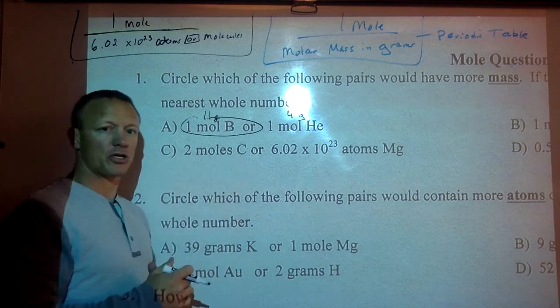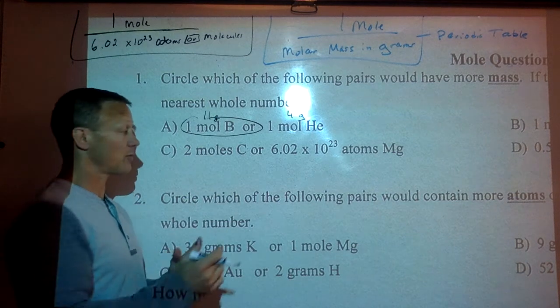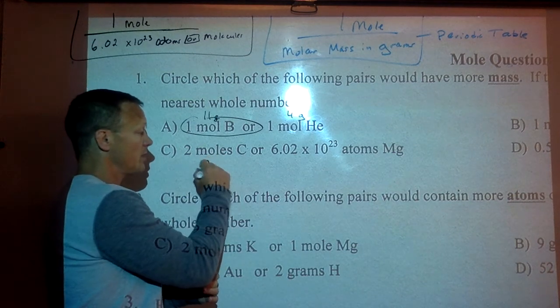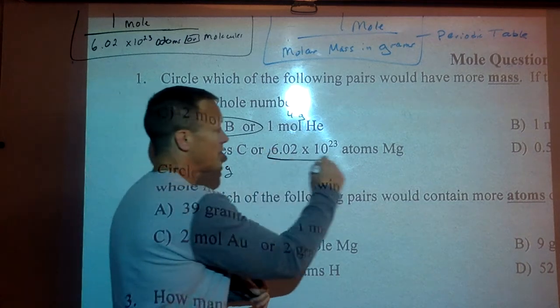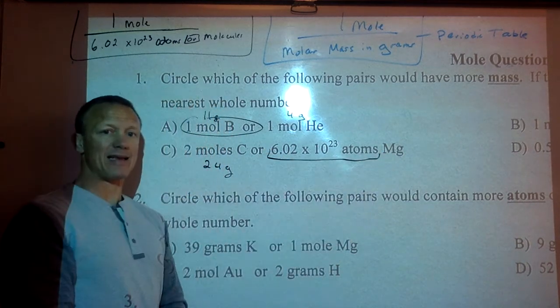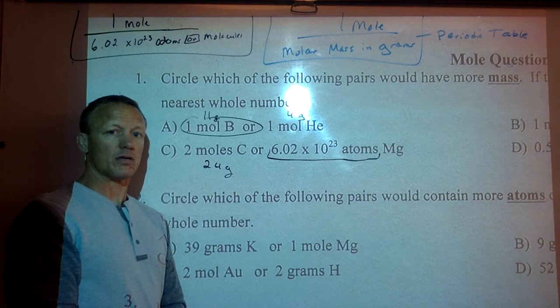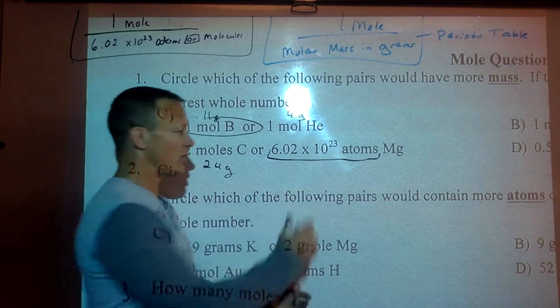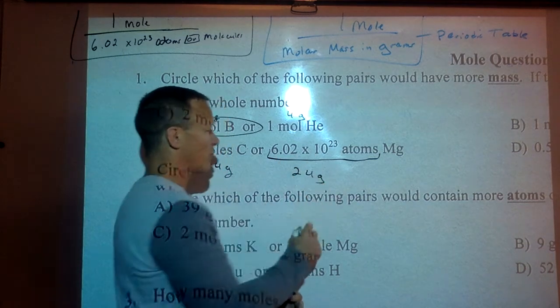Two moles of carbon. So I look up how much a mole of carbon is, and it's 12 grams per mole. So two moles of carbon would be 24 grams. This is a mole of magnesium. That many atoms of magnesium would have a mass of 24 grams. Those are equal.